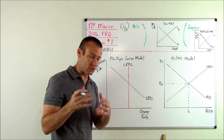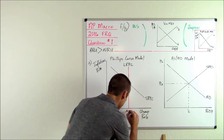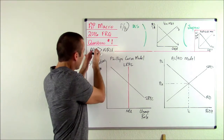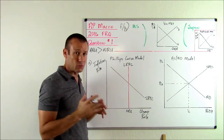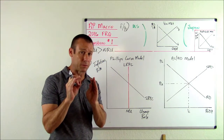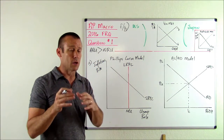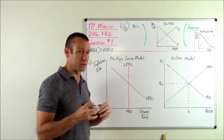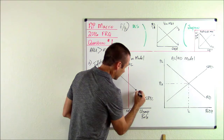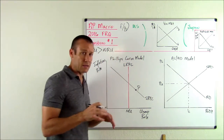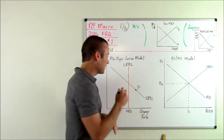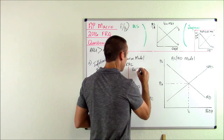The LRPC is anchored at the natural rate of unemployment. Our actual rate of unemployment is greater than the natural rate, so we're on the right-hand side. We are always on the SRPC, but not always on the LRPC. We're to the right of the LRPC — put a dot there and label it B. We're in a recessionary gap; the right-hand side of the LRPC is the recessionary gap.